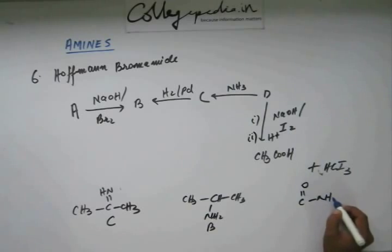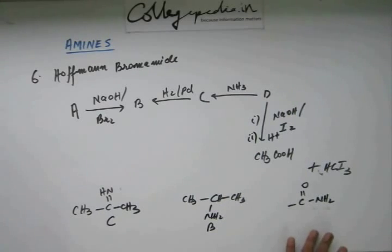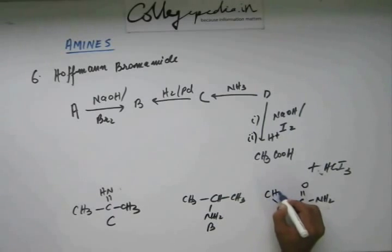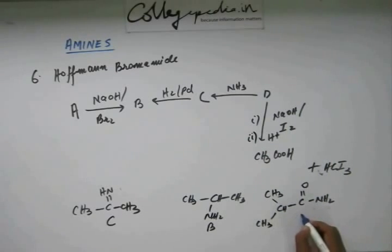So Hoffman Bromamide is carried out on amide. This is amide. So this group has to be there in A and you are getting B after the reaction is over and we have learned how to draw the product of Hoffman Bromamide. So you will have no trouble in identifying that this is what A must be. Because when C double bond O goes away, NH2 will come to this carbon and this is what B is. So this is the structure of the demanded compound A.